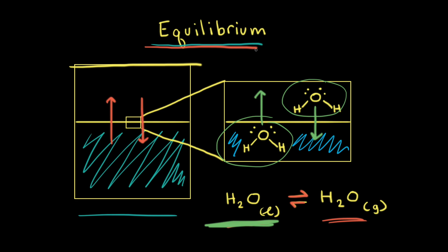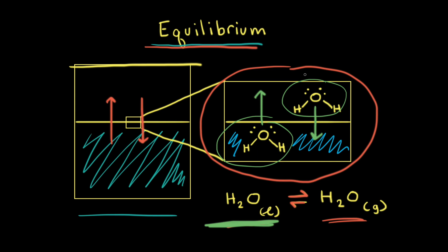This is a dynamic equilibrium, because if we zoom in, water molecules are being converted from the liquid state to the gaseous state all the time, and molecules are going from the gaseous state back to the liquid state all the time. However, since the rates are equal, the number of molecules in the liquid and gaseous state remain constant. And from a macroscopic point of view, the level of water wouldn't change at all.